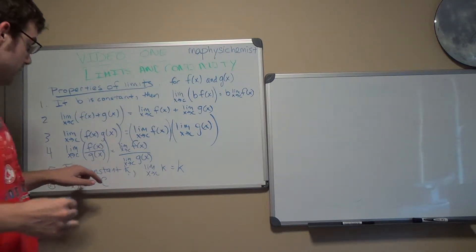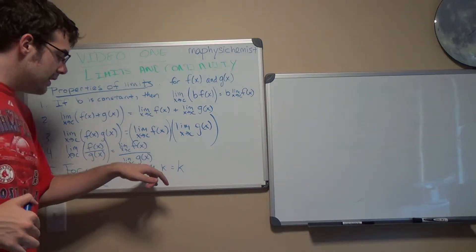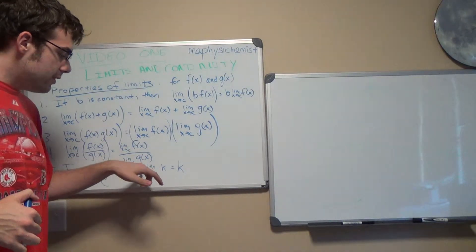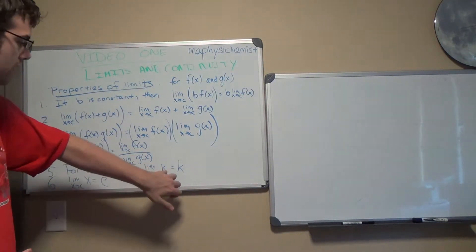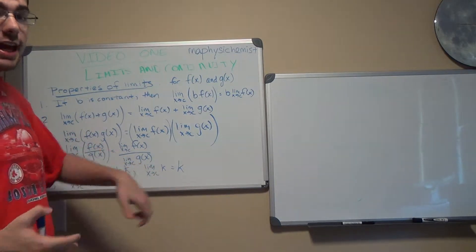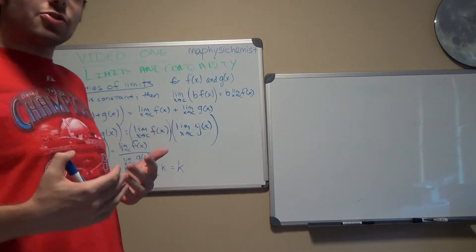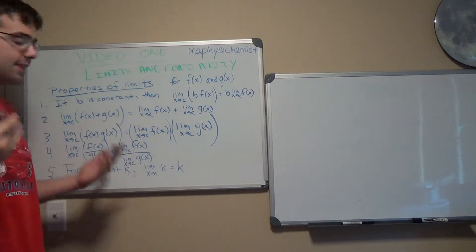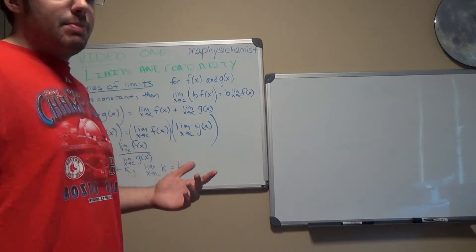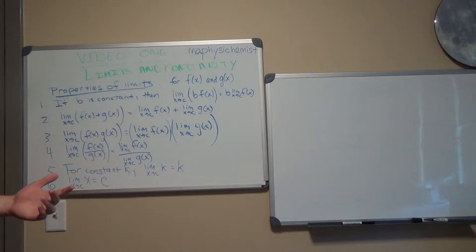And then for constant k, the limit of x as it goes to c of k is k. That's basically just telling you there's no x in the function. So the function is not dependent on x.